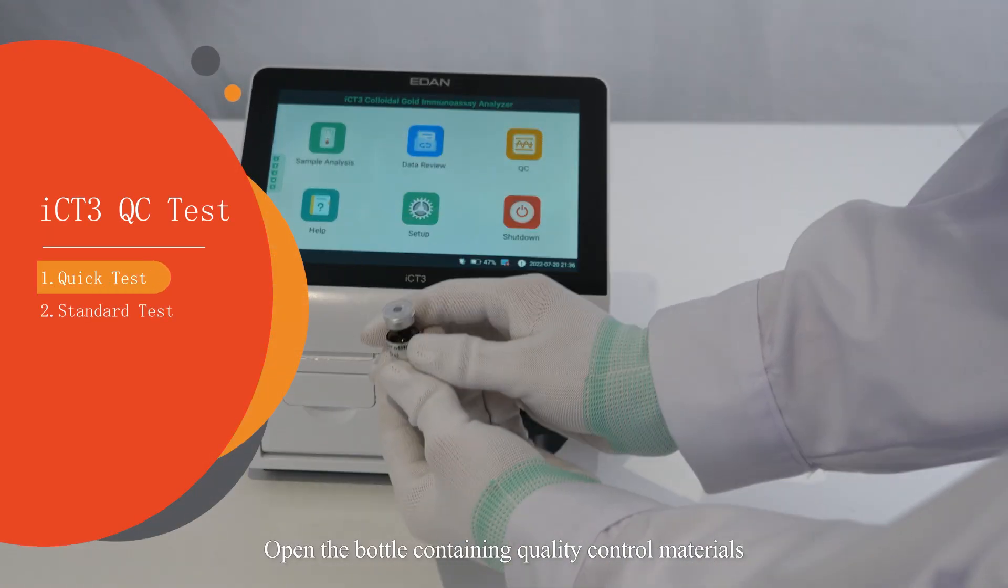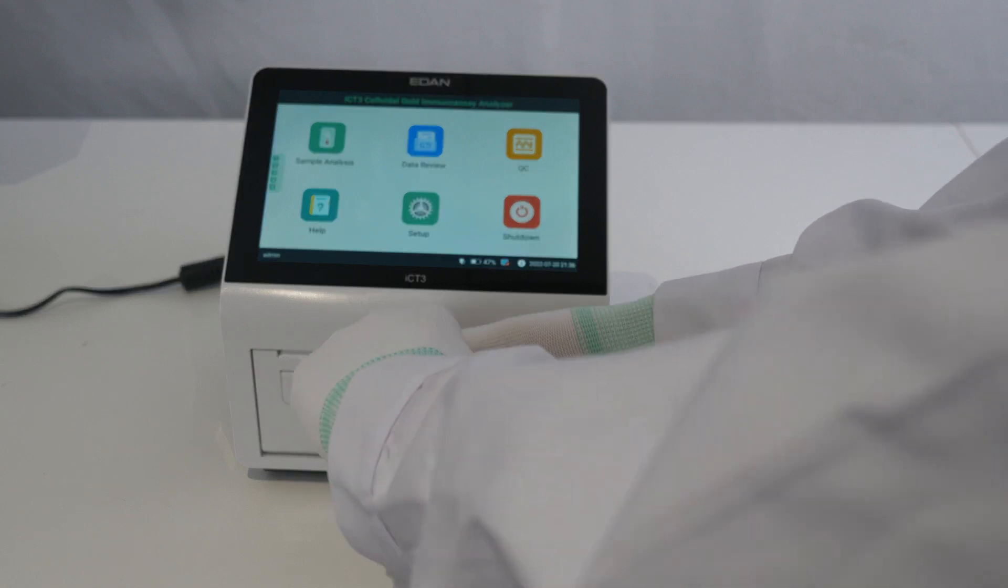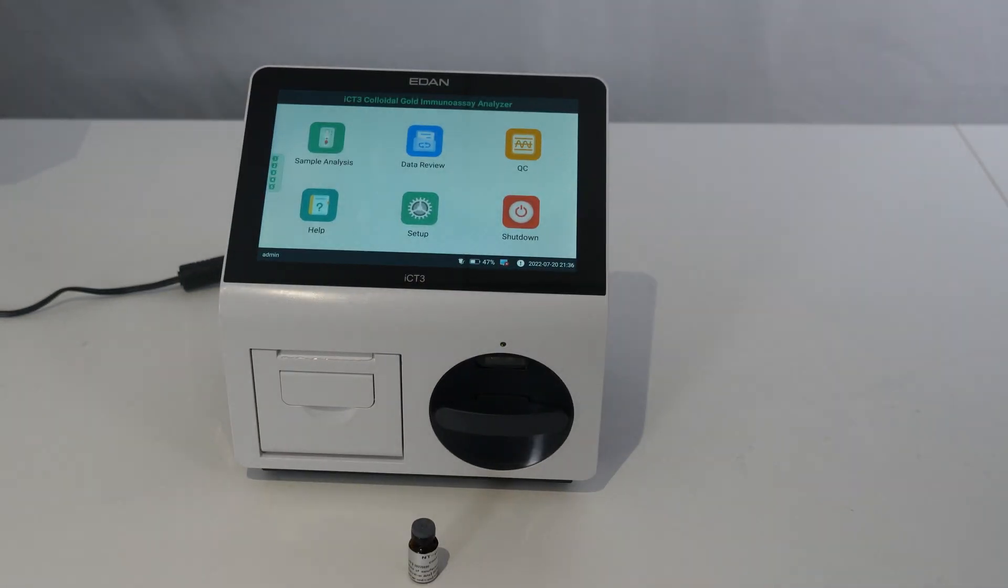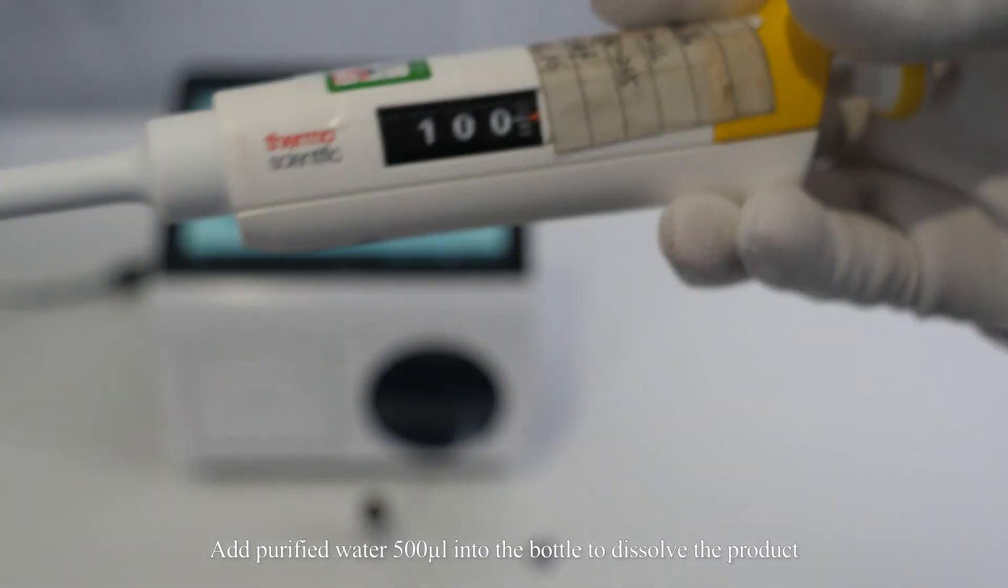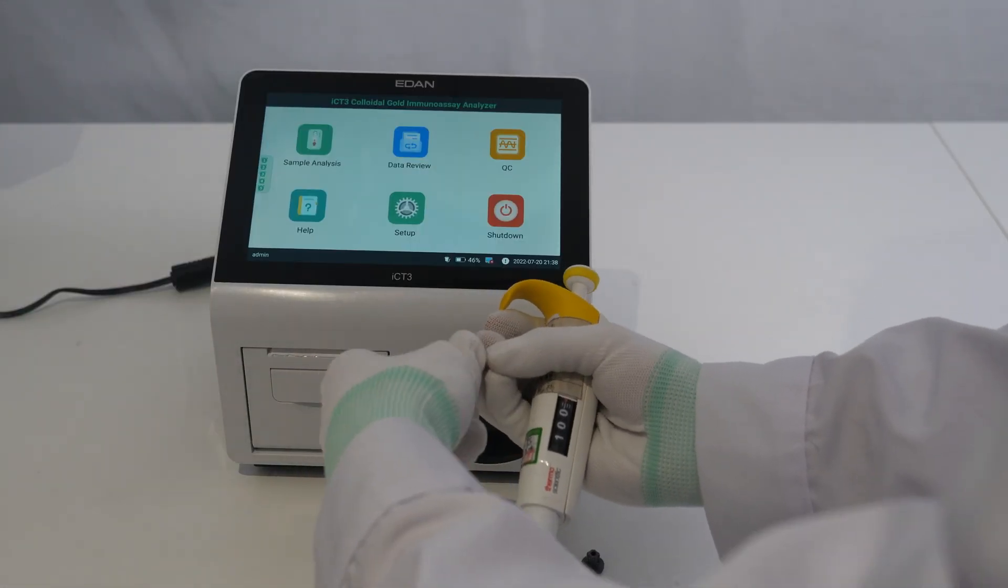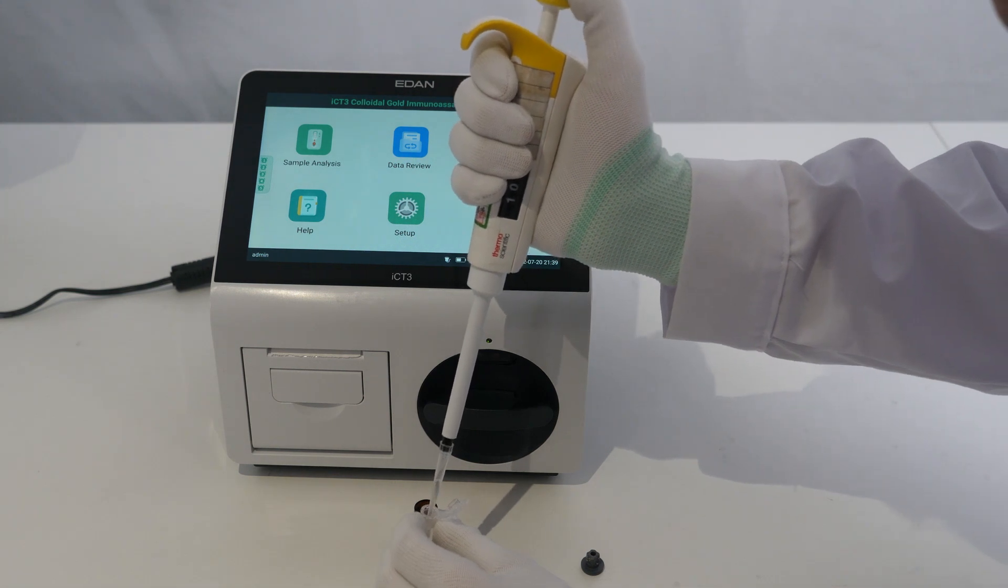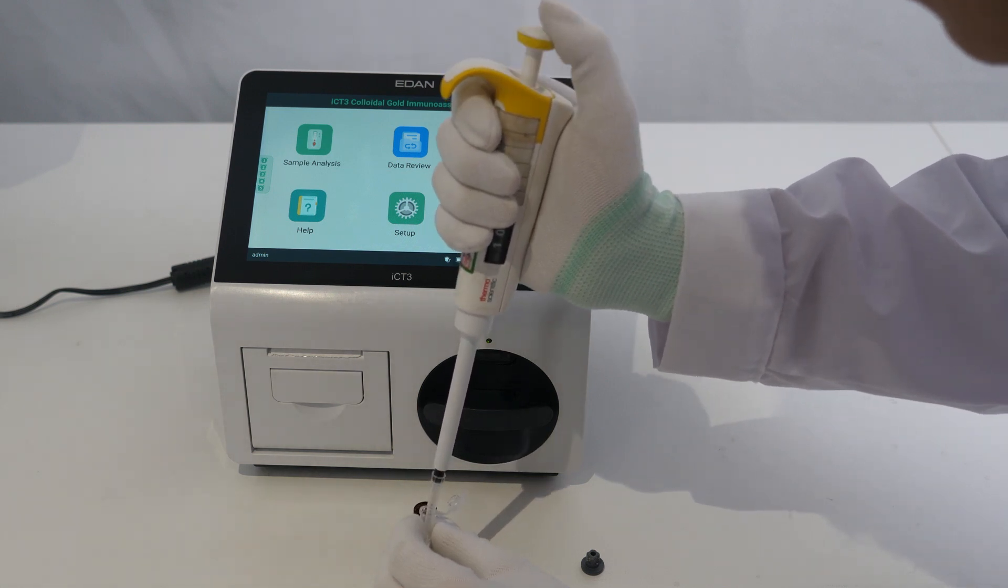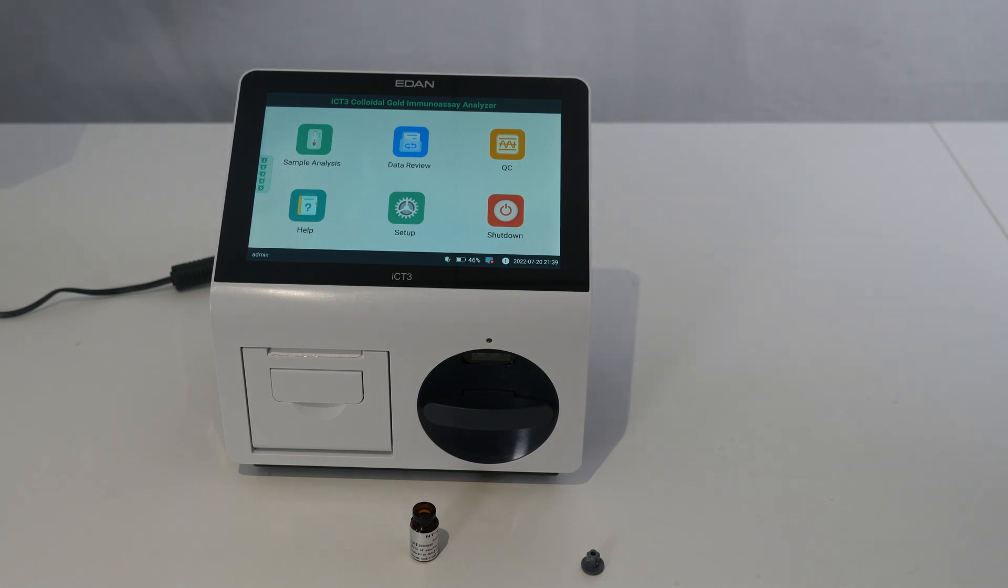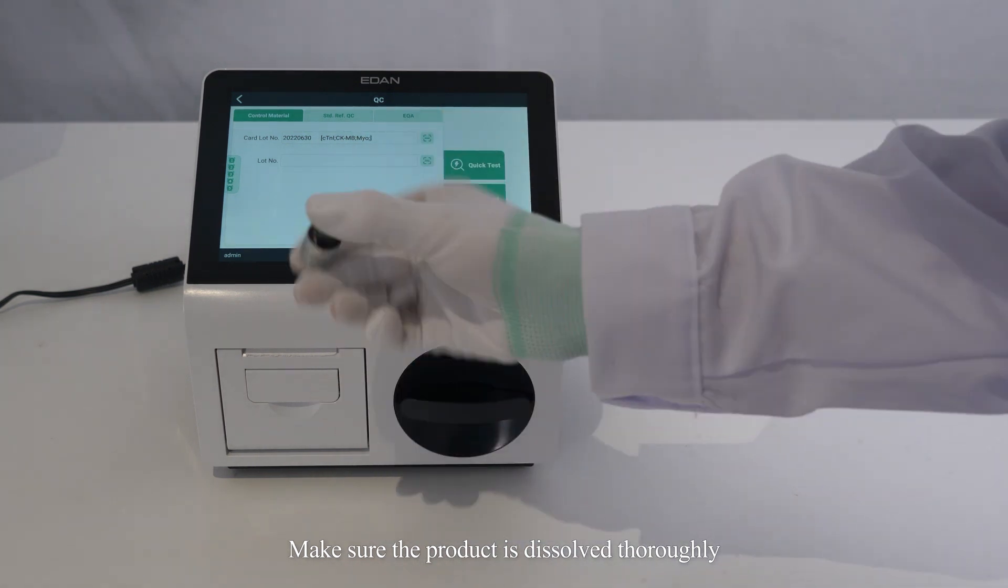Open the bottle containing quality controlled materials. Open the cork. Add purified water 500 microliters into the bottle to dissolve the product. Close the bottle cap and gently mix the bottle upside down. Make sure the product is dissolved thoroughly.